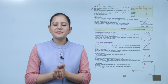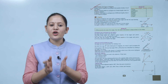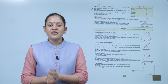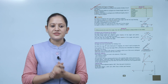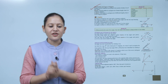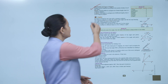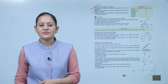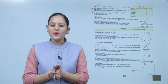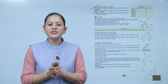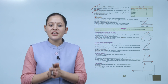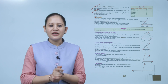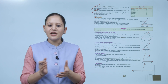Polygons can be classified according to the number of sides. There are two types: regular polygons, where all sides are of the same length, and irregular polygons, where the sides are of different lengths.